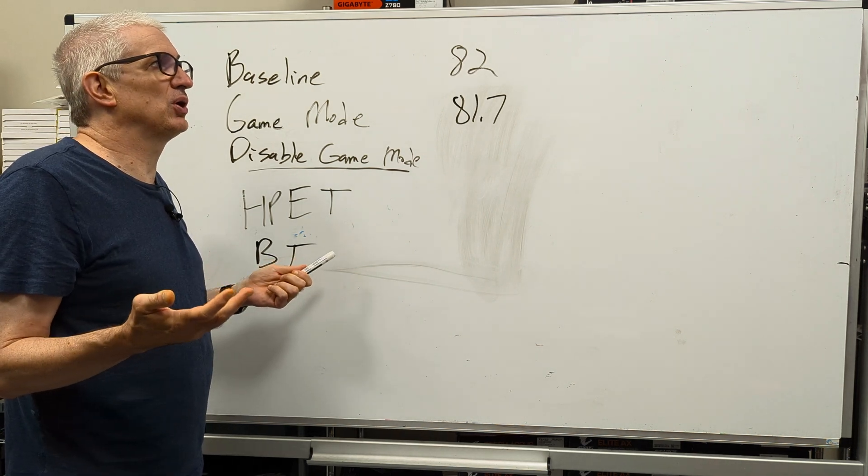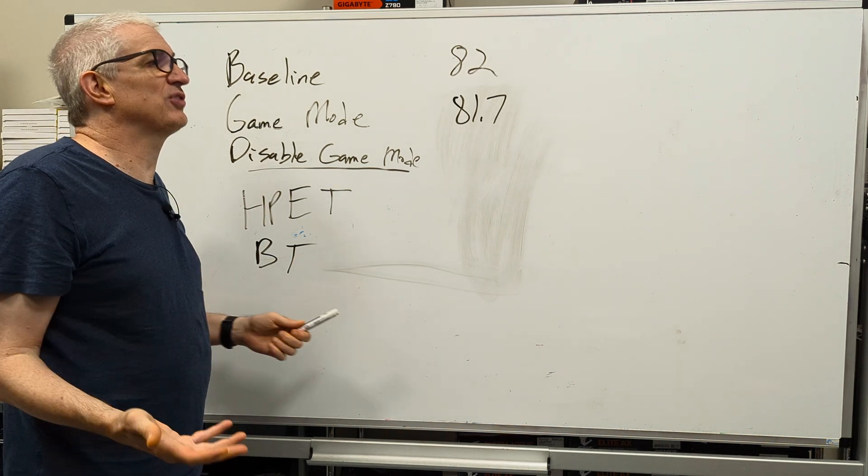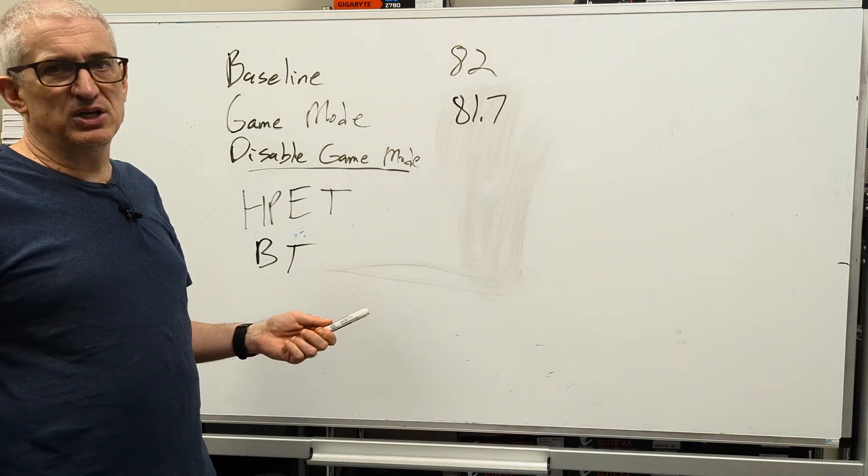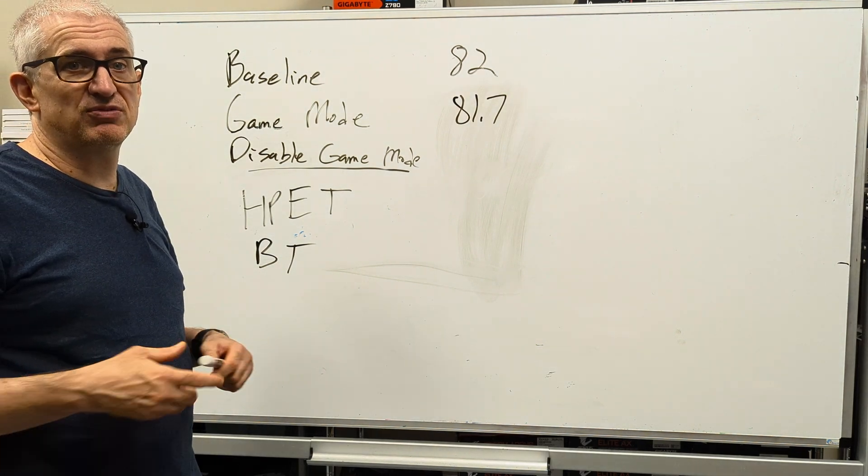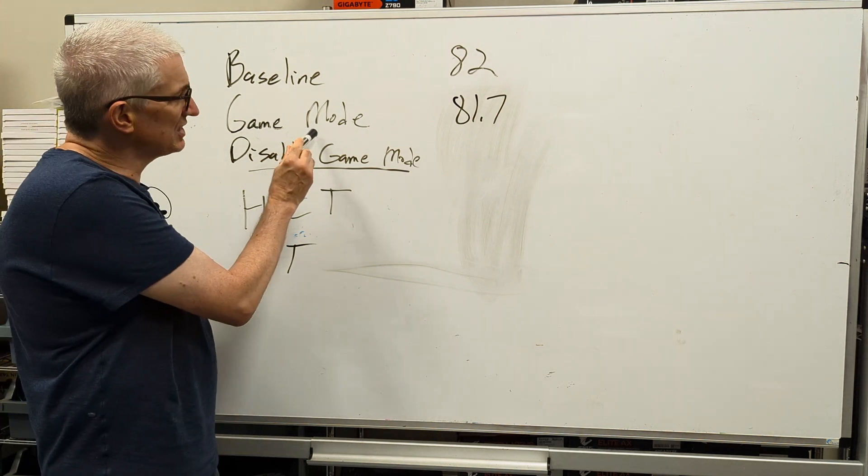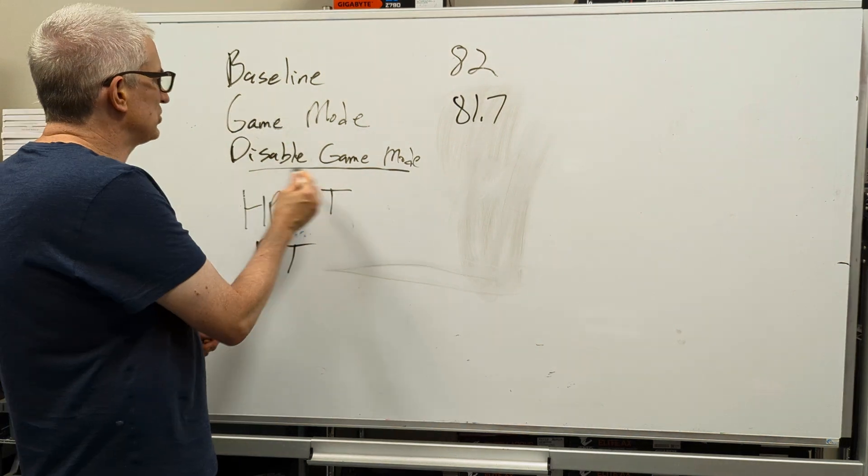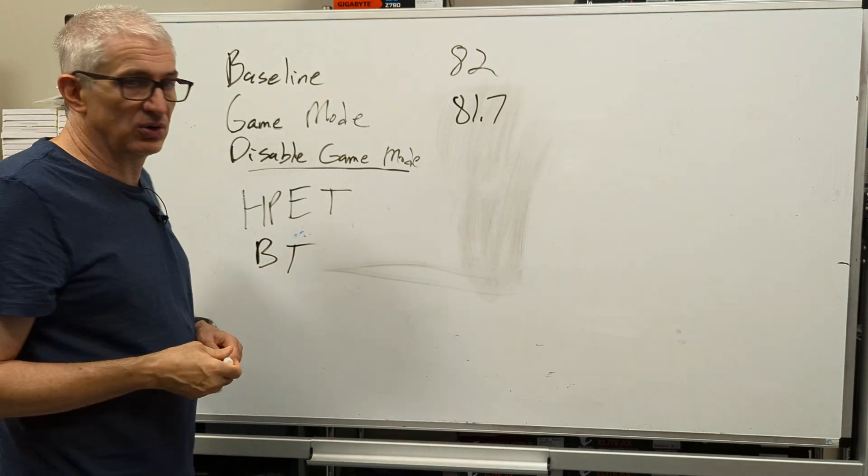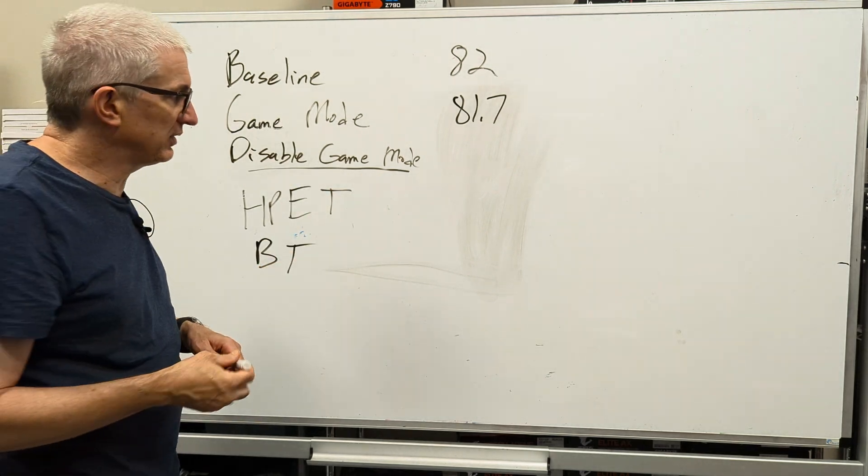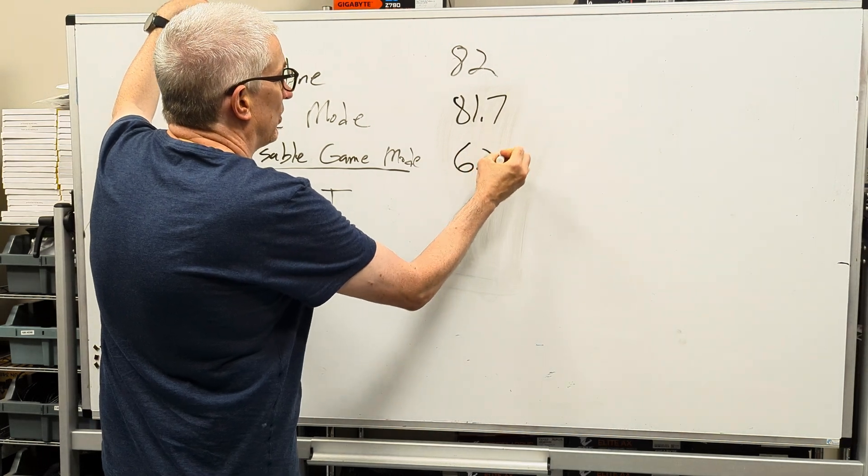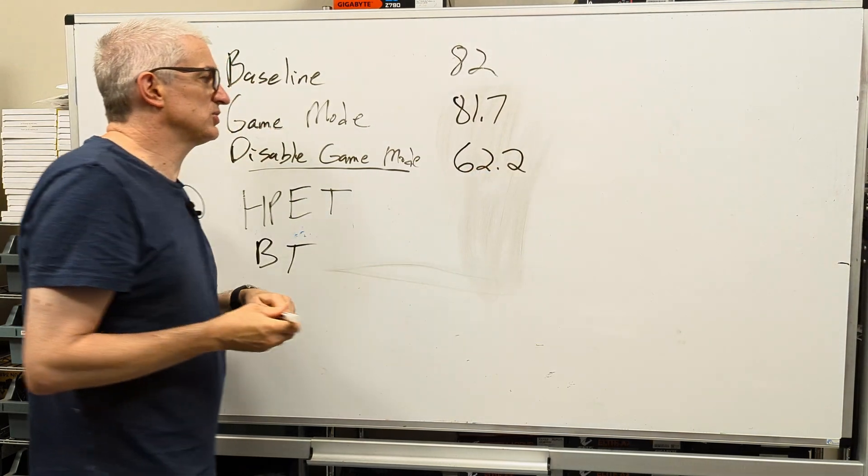So I thought to myself, I said, well, shoot, he says to enable game mode. Well, what if someone were to disable it? What would that do? I didn't really expect much, but to my shock, there was a difference. So again, game mode is enabled by default in Windows 11. But if for some reason you went into disabled game mode or some program you're running disabled game mode, what would happen? Well, a massive drop-off, 62.2.